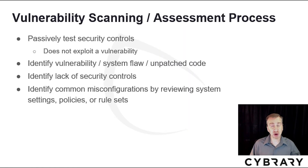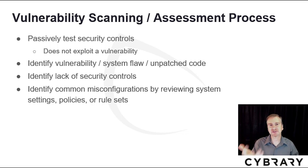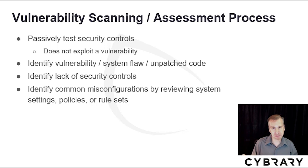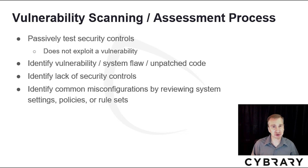On your screen is a process for conducting a vulnerability scan or vulnerability assessment. You start by passively testing security controls, not exploiting any vulnerability — it's a passive test. Step two, identify the vulnerability, system flaw, or unpatched code, which can be done through an automated system or manual means. You should also identify lack of security controls, such as misconfigurations or not setting appropriate standards or policies on the computer system. Lastly, identify common misconfigurations by reviewing system settings, policies, or rule sets.